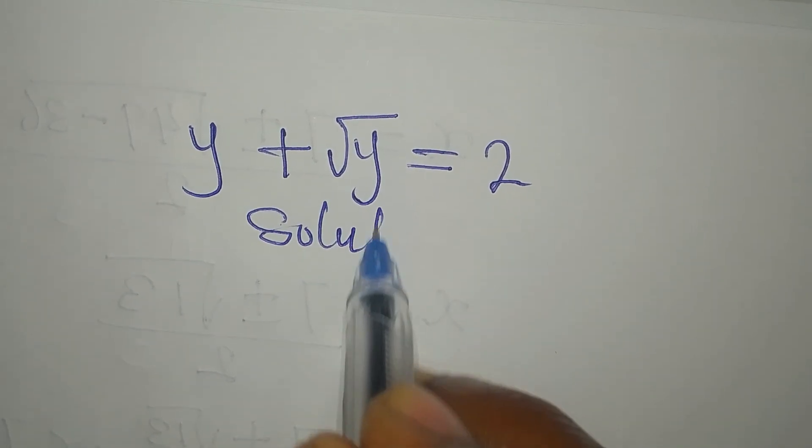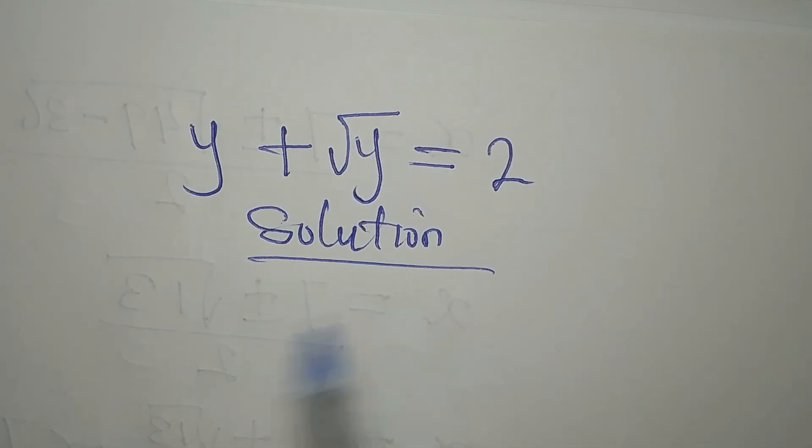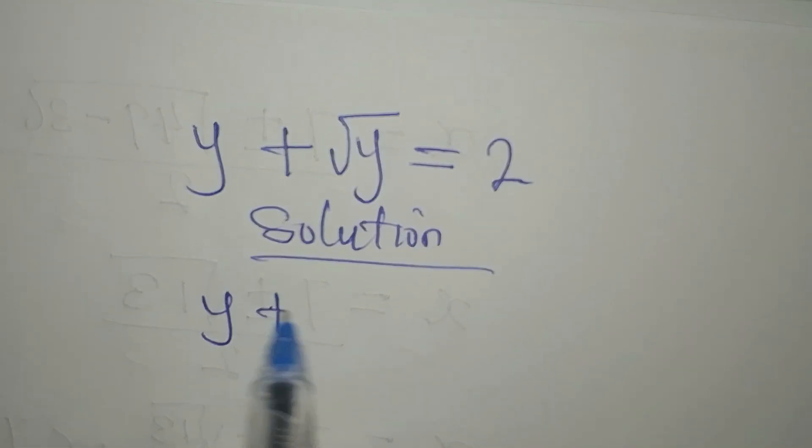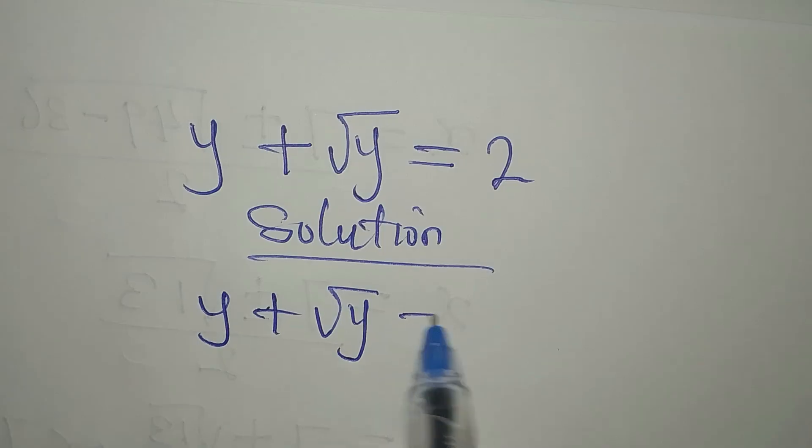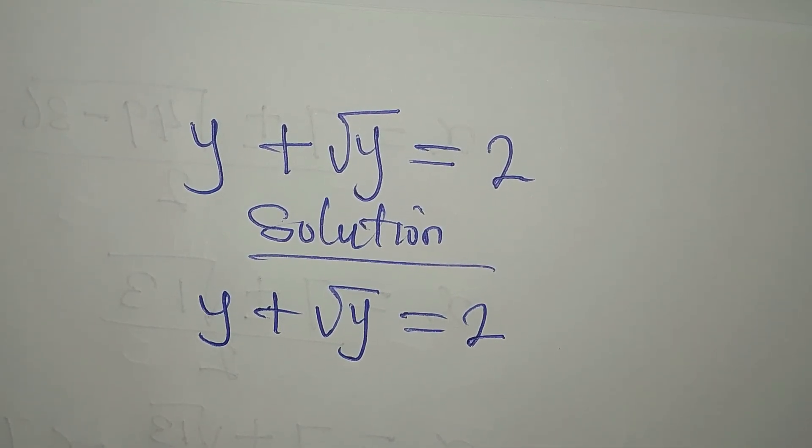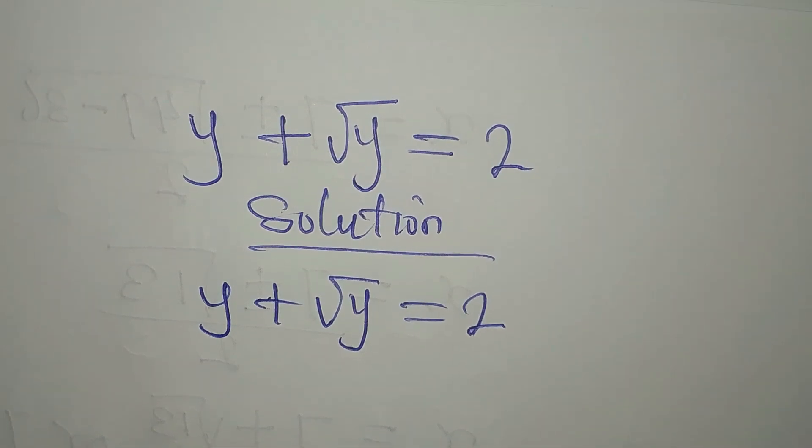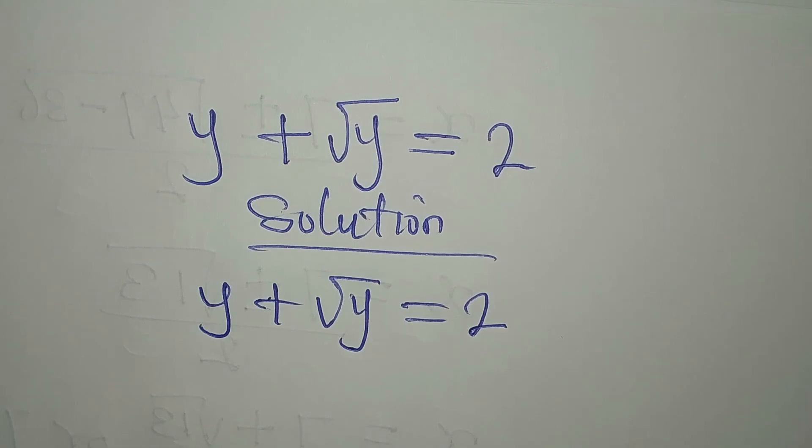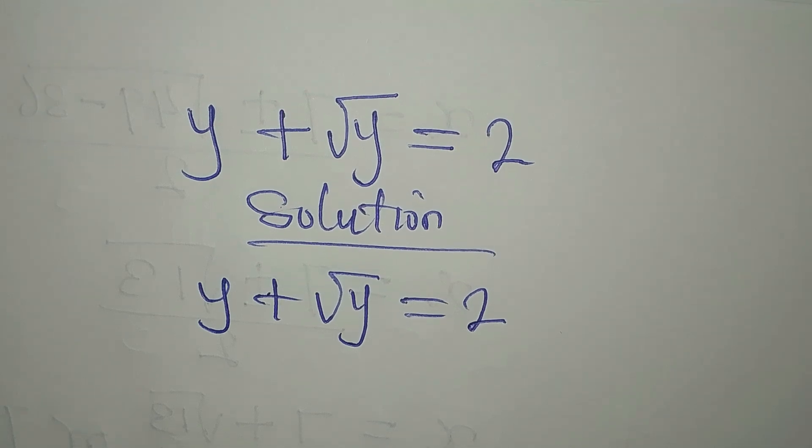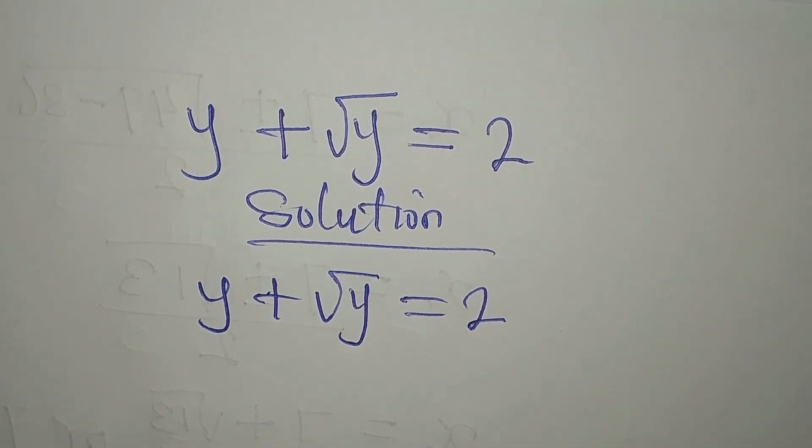Hi everyone. Let's provide a solution to this problem: y plus square root of y equals 2. By looking at this question, you are expected to know the value of y. But imagine if you are to solve it, maybe in a theory section that you are supposed to solve it. What would you do? So sit back and look at the steps, and if you were the one, would you use the same step I'm going to use? Just sit and watch.